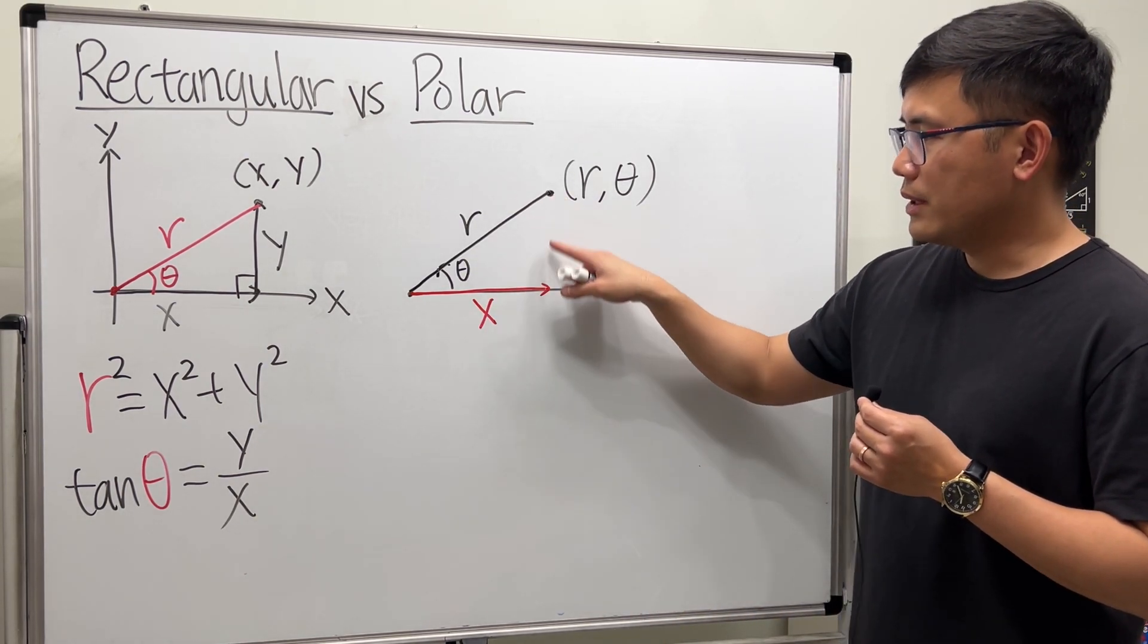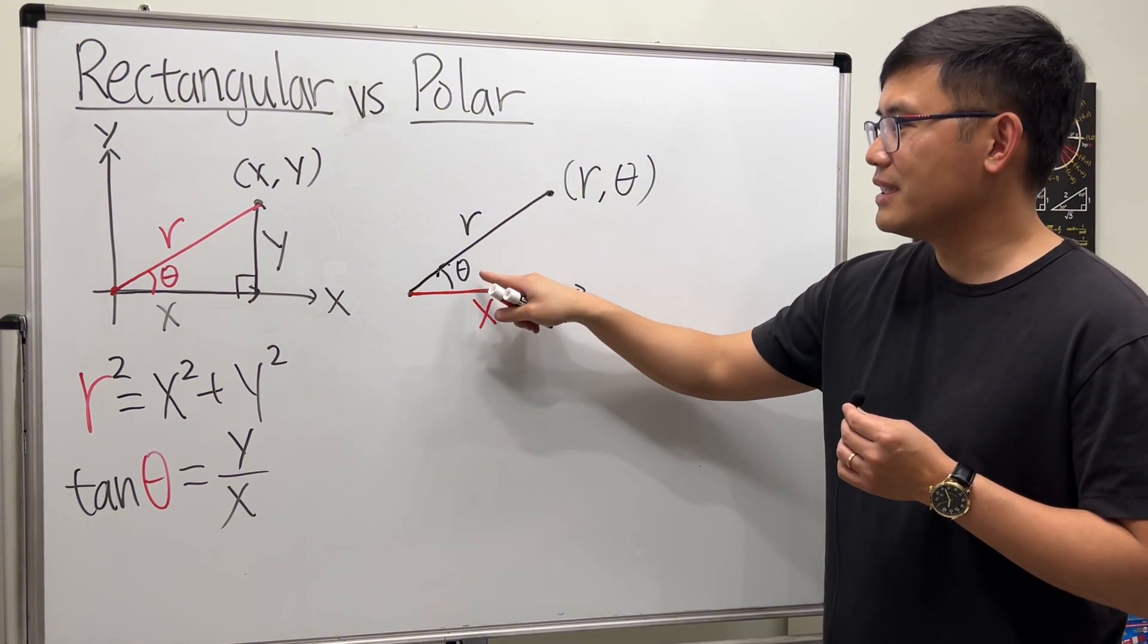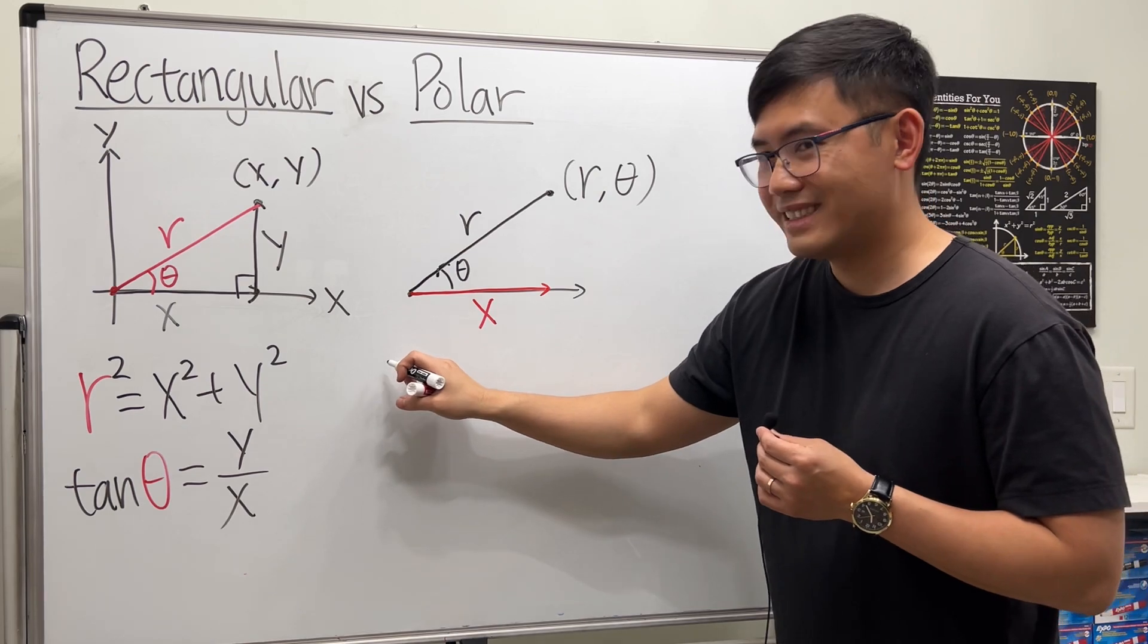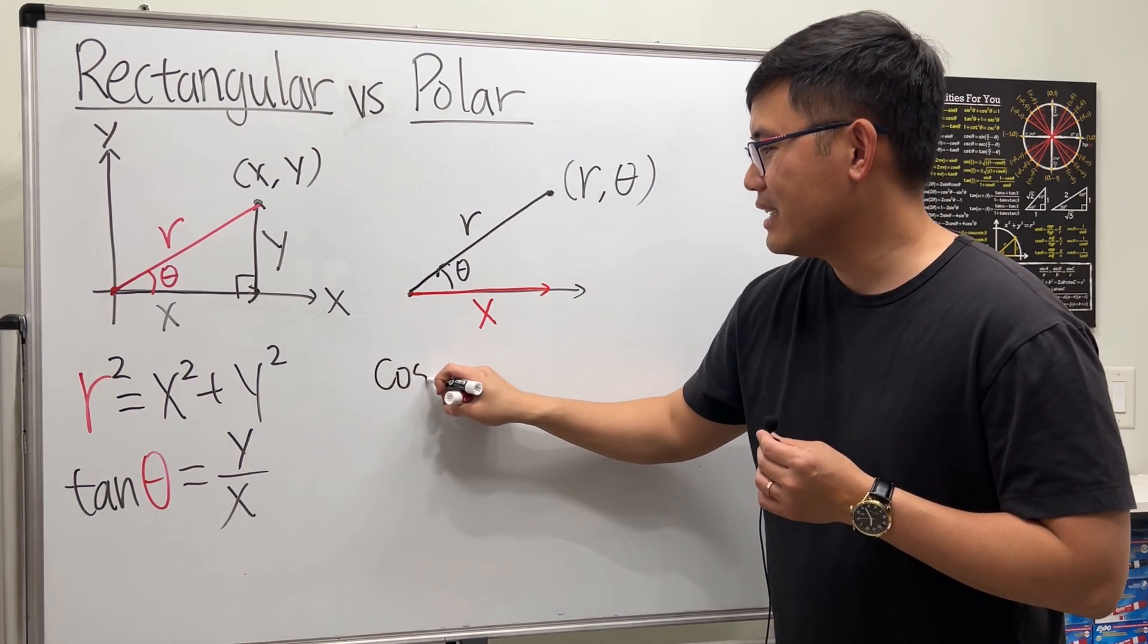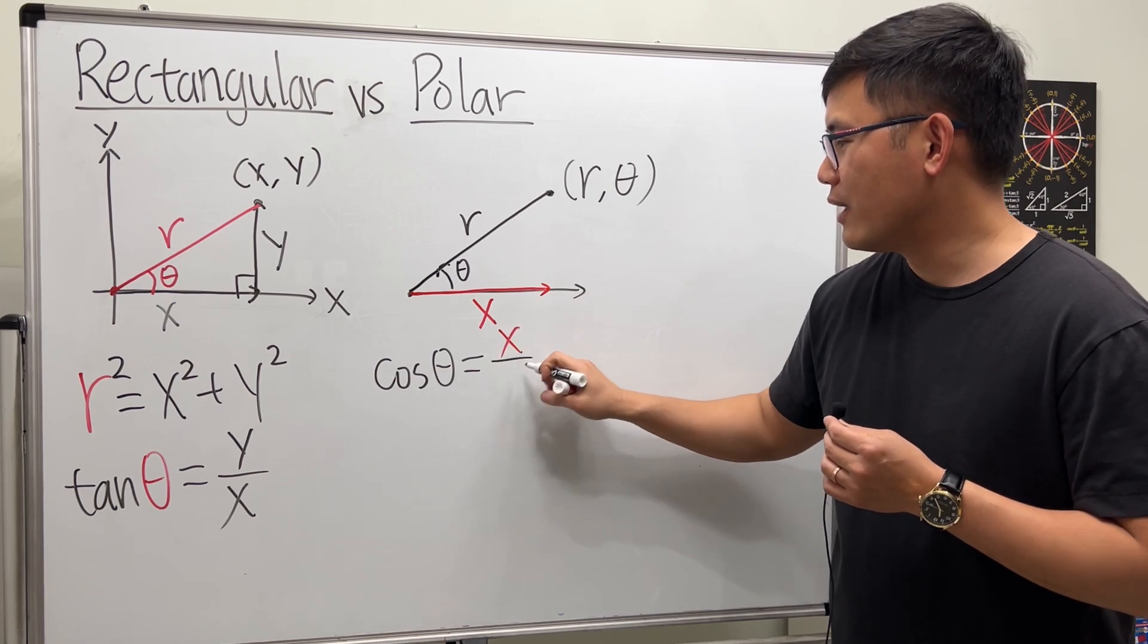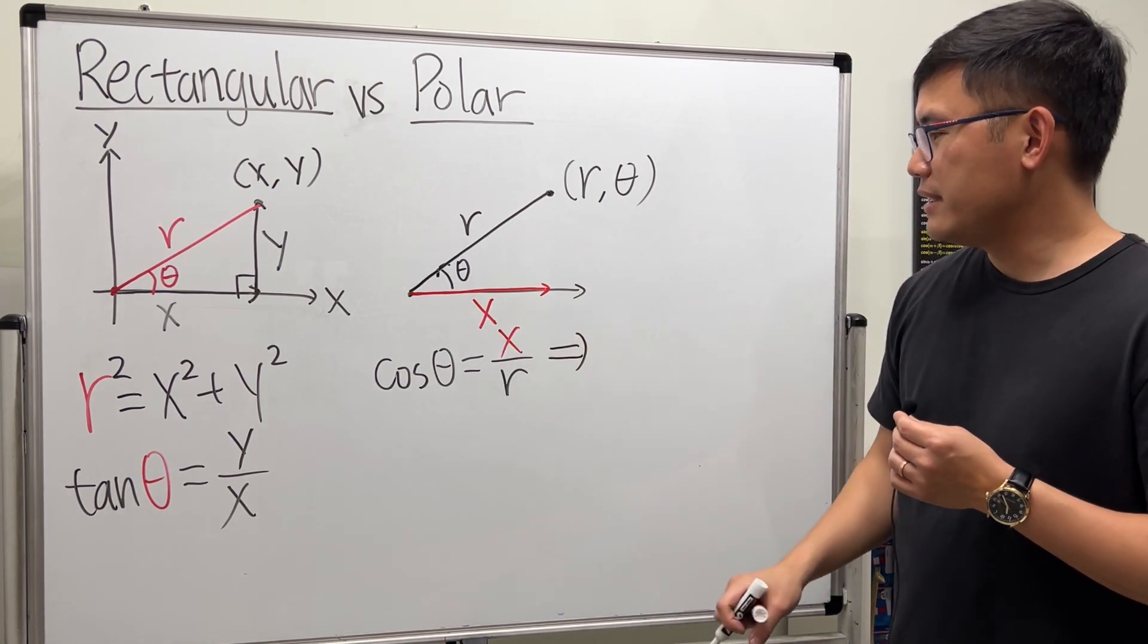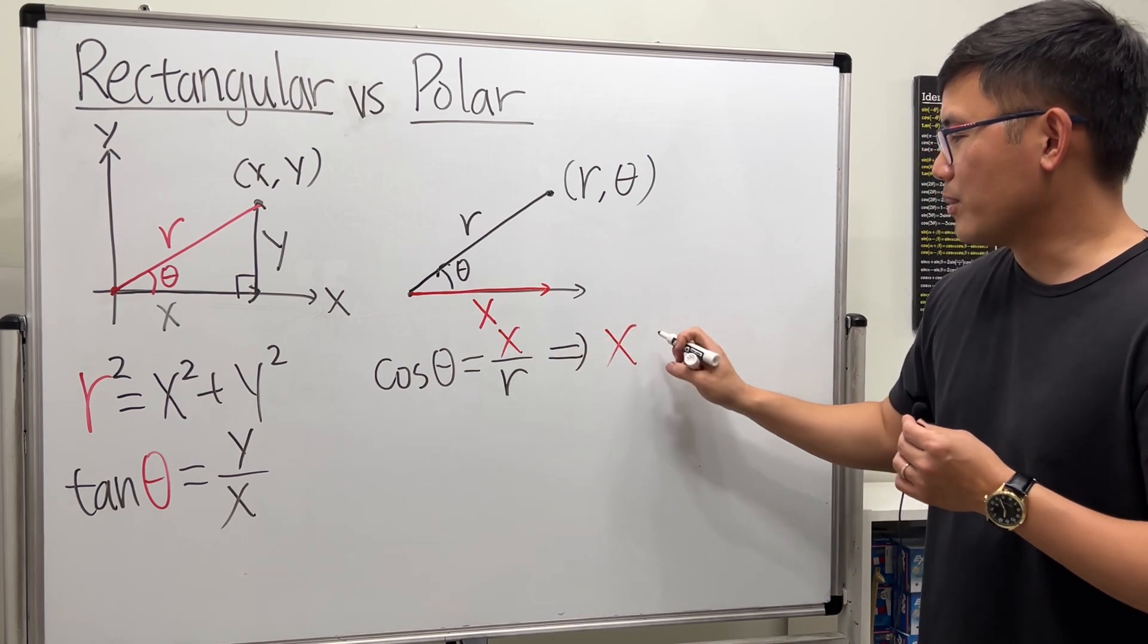Well, you know that there's a right triangle, and here we have the hypotenuse and also the angle, so we can use cosine. Cosine theta equals adjacent over hypotenuse, which is r. And if you want to isolate the x, you can just multiply r to both sides, so x = r cos θ.